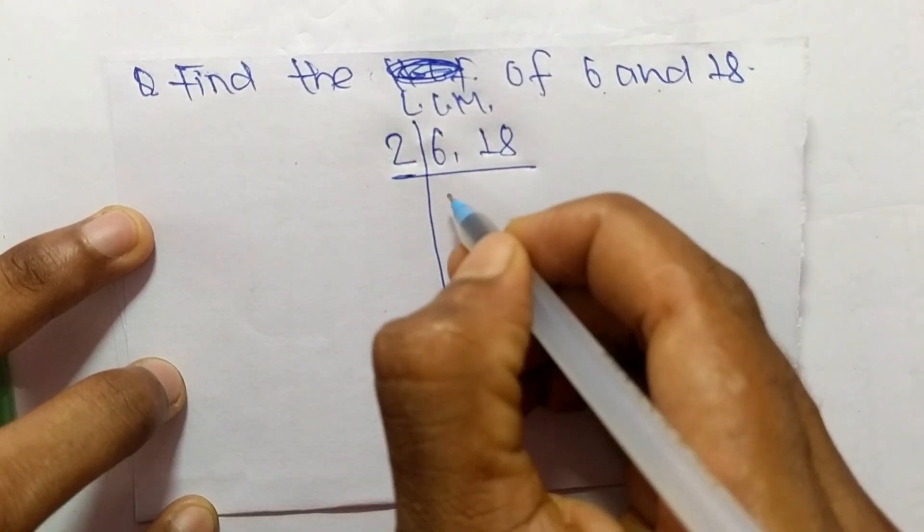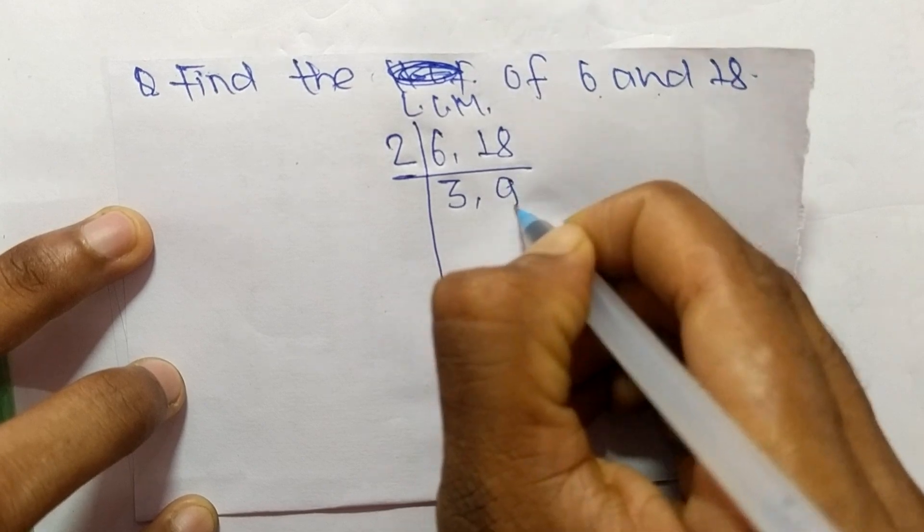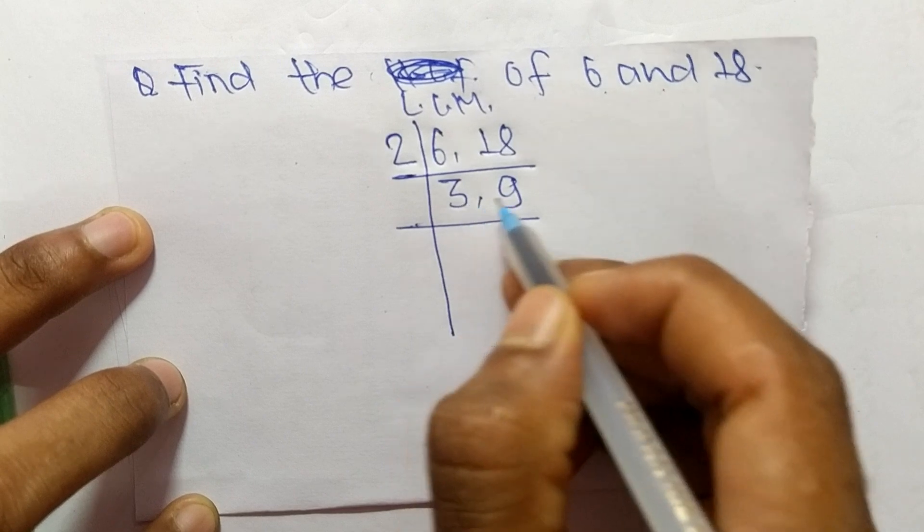2 times 3 is 6 and 2 times 9 is 18. Again, 2 cannot divide both numbers, so we take the number greater than 2, which is 3.